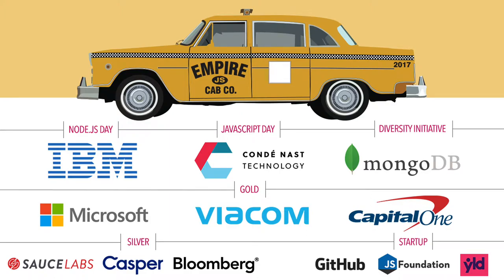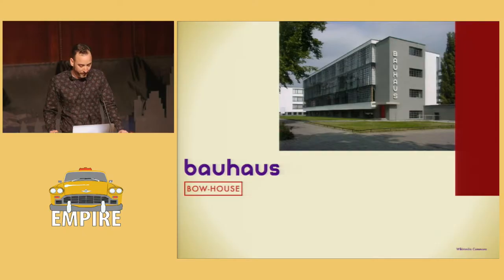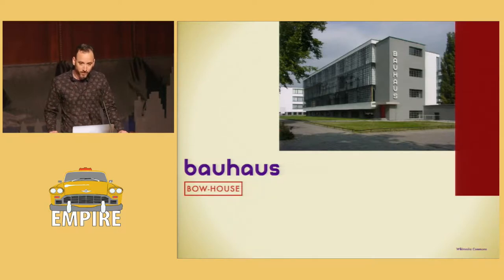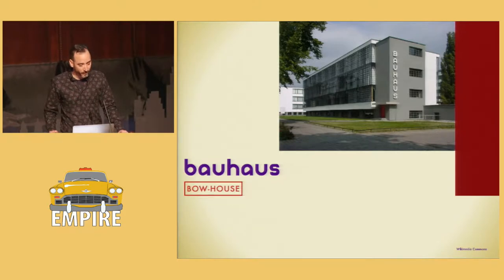Let us, therefore, create a new guild of craftsmen, free of the divisive class pretensions that would endeavor to raise a prideful barrier between craftsmen and artists. This was the manifesto of Walter Gropius, founder of the Bauhaus School in Weimar, Germany. His manifesto called for the collaboration of artists and craftsmen, which ushered in that balance of form and function that we call modern design. Bauhaus was a German art school that existed briefly between World War I and World War II, and visionaries at the time saw opportunities to use art and technology to advance society. And it was with this outlook that Walter Gropius founded Bauhaus.